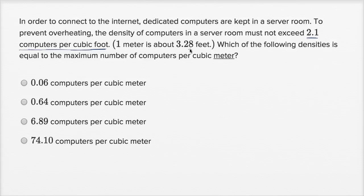One meter is about 3.28 feet. So they're converting linear meters to linear feet. They're not telling us how many cubic feet is one cubic meter, so I suspect we're gonna have to figure that out. Which of the following densities is equal to the maximum number of computers per cubic meter?